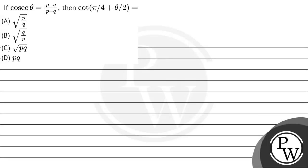Hello. Let us see the question. The question says: if cos theta equals p plus q divided by p minus q, then cot of pi by 4 plus theta by 2 is equals to what?